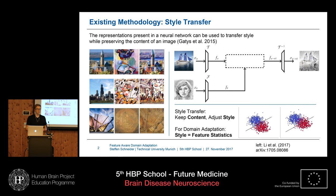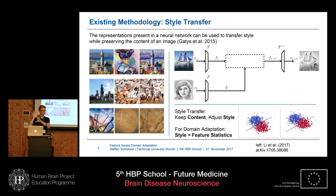Recent developments in deep learning have developed something called artistic style transfer, which was first introduced by Leon Gatys from the Bethge Lab in Tübingen two years ago. The basic idea is to transfer the style of a style image, by a painter for example, to a photograph you have taken. The intuition is that you preserve the content information in your image and remove all the style information, then modulate style information from the style image onto your content. What drops out is basically an image painted in a particular style of an artist.